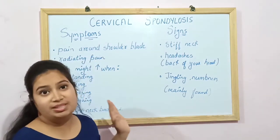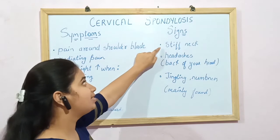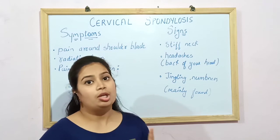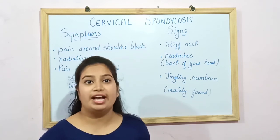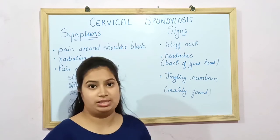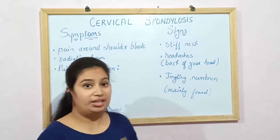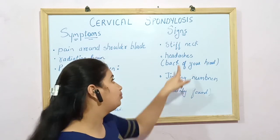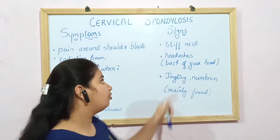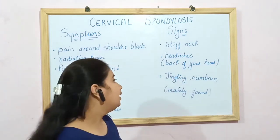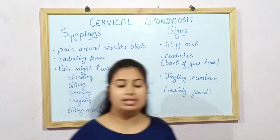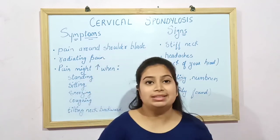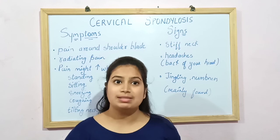Common signs of cervical spondylosis include a stiff neck, which is due to ligament tightness or contracted muscles. Headaches are also common, as the nerves and muscles connected to the head create pain mostly at the back of the head. Tingling and numbness can radiate up to the elbow and, in severe cases, all the way to the fingers.